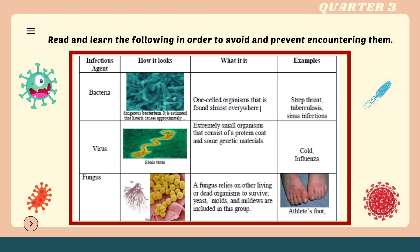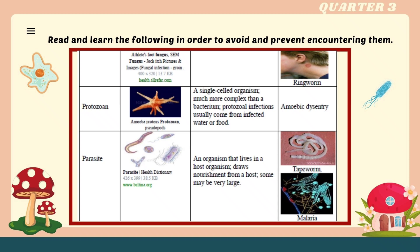Virus: extremely small organisms that consist of a protein coat and some genetic material. Examples include the cold and influenza. Fungus: a fungus relies on other living or dead organisms to survive. Yeast, molds, and mildews are included in this group. Examples include athlete's foot and ringworm.